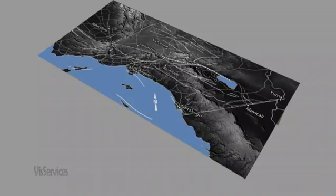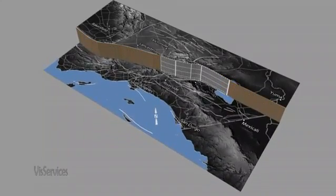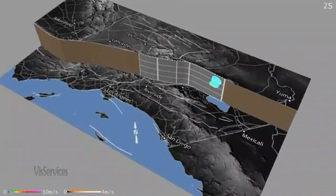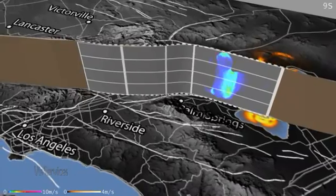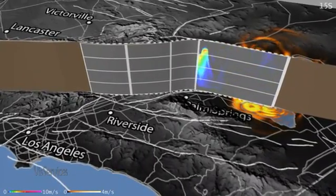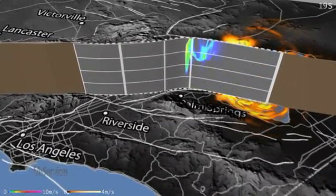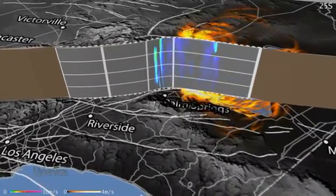In this animation, the fault slip rate is displayed along the 16 km deep vertical plane. The surface wave speed is shown along the horizontal plane on both sides of the fault plane.